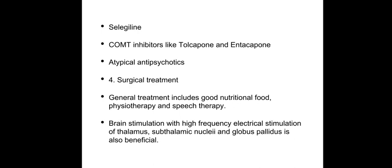Surgical treatment: destruction of the globus pallidus or the ventrolateral nucleus of the thalamus by stereotactic surgical procedure may also be done. Dementia is a contraindication to surgery. General treatment includes good nutrition, physiotherapy, and speech therapy. Brain stimulation — high-frequency electrical stimulation of the thalamus, subthalamic nucleus, or globus pallidus — is also beneficial.